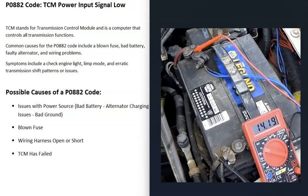Next, check the alternator to make sure it's outputting correctly. If you have a multimeter, start the vehicle and check the voltage at the battery terminals. Most alternators output around 13.5 to 14.5 volts. If the output falls in that range, it's good. You can look up your specific vehicle's rated output — some newer vehicles have smart alternators — but generally 13.5 to 14.5 volts means the alternator is fine.